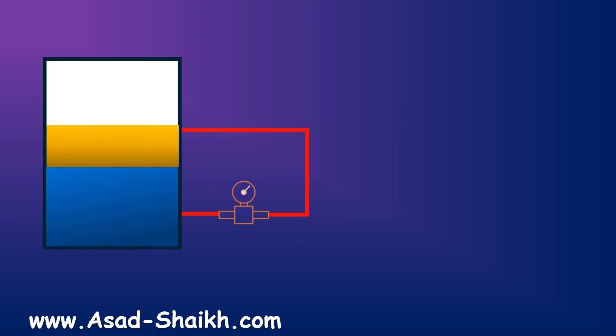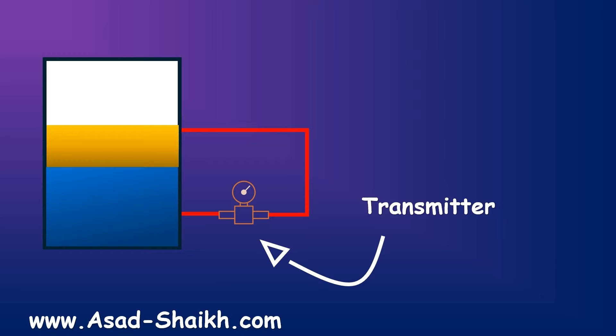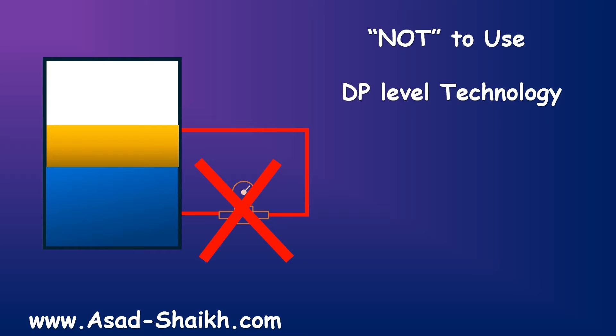In this video we learn about the DP level technology. Here is the transmitter, and in order to measure this we will be using the 4 to 20 mA method, which is one of the most used methods throughout the world to do this calculation. DP level measurement cannot be used for every single application — there are major limitations for this technology — and we will deal with this at the end of the video.